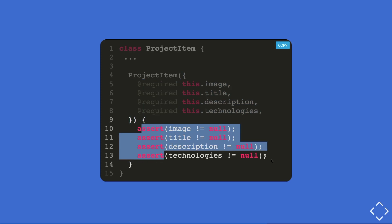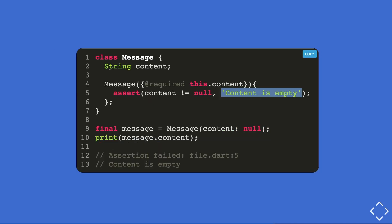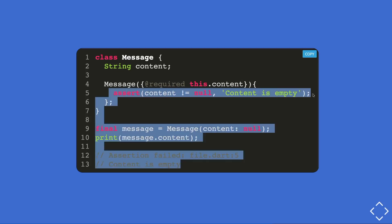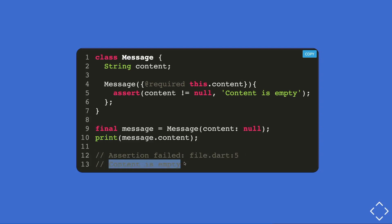Instead of seeing 'image != null is not true', you can add a readable error message to your assertion. Going back to the Message class example, you add a second argument to the assert — a string like 'content is empty'. Now if you create a Message with a null content and print it, the assertion fails with the readable message 'content is empty'.